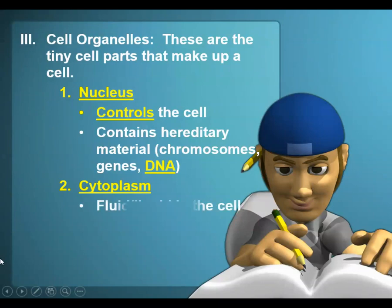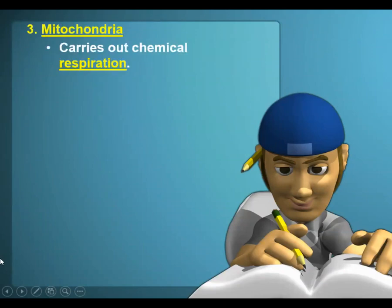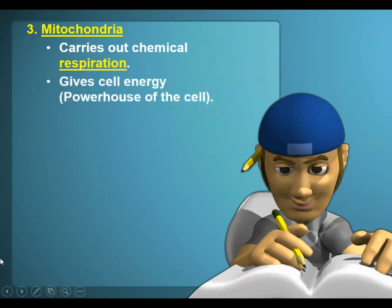The cytoplasm is the fluid or liquid part of the cell. It helps to transport materials, dissolves things, and is mostly water. Then we have mitochondria, where cellular respiration occurs. It's nicknamed the powerhouse of the cell because it provides energy in the form of ATP. If asked to write about the function of mitochondria, please explain that it provides energy for the cell rather than just writing 'powerhouse.'